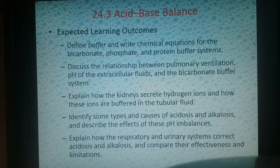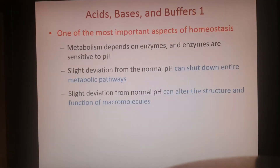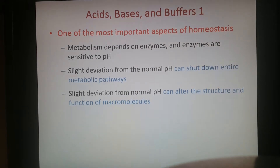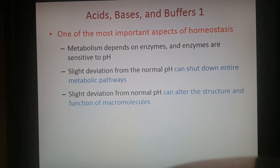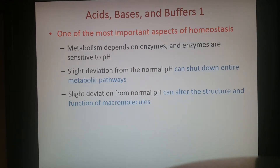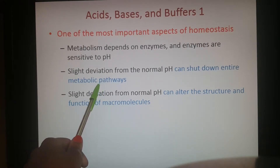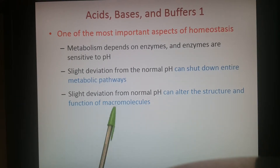Moving on to acid-base balance — maintaining the pH in the body is one of the more important aspects of homeostasis, because your pH level determines the shape of different proteins, including enzymes. If the pH is off, the shape of a protein changes, and for enzymes with a lock-and-key mechanism, if the shape is wrong, that mechanism won't work. Deviation from normal pH can shut down a pathway and also alter the structure of different macromolecules.